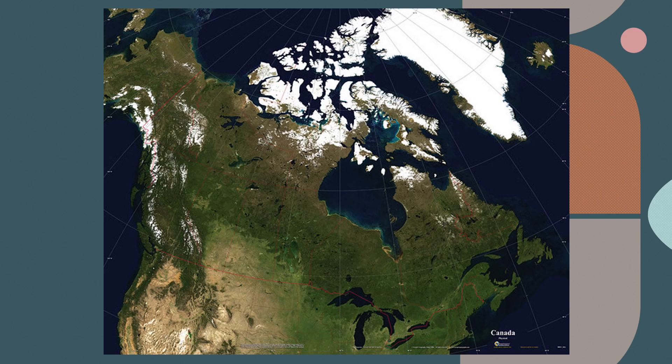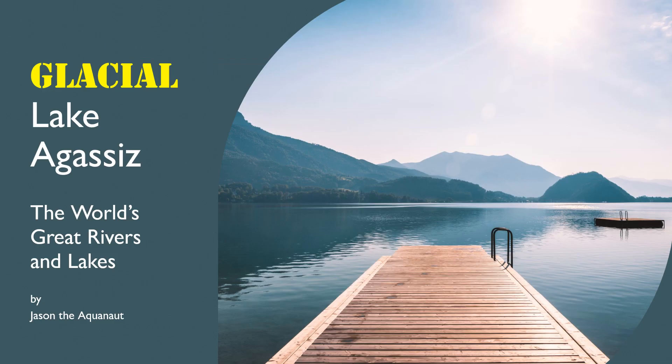This satellite image of Canada shows the landscape that we would expect. We can see the Great Lakes and Hudson Bay. As we expect, there is no big lake in the middle of Canada. So Lake Agassiz is a joke, right? Or maybe a figment of my imagination. Well, not exactly. Let's start this presentation over.